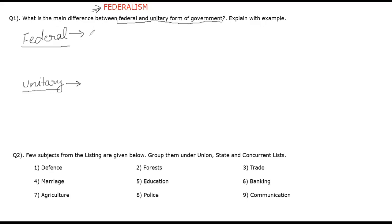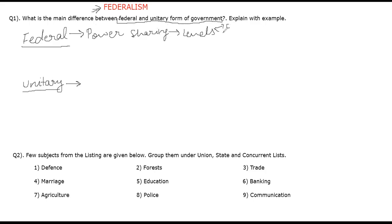First, we will discuss what federal government is. This topic is mainly related to federalism. As we have already studied, federal government is power-sharing. Power is shared at different levels — there can be the central level, the state level, or any other level, such as the local level. This is what the federal structure of government is.